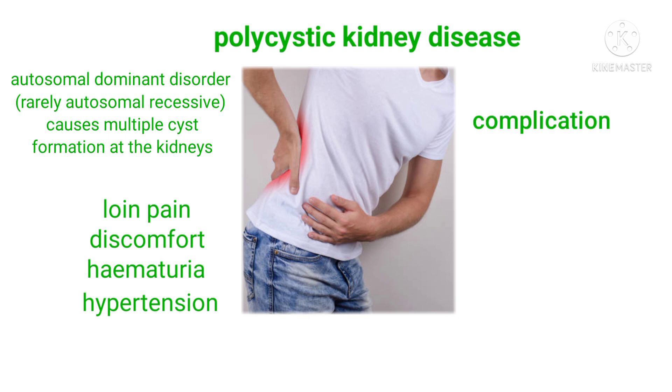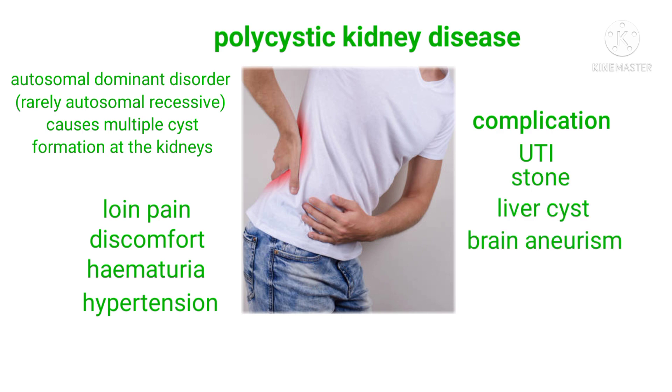Polycystic kidney disease may be associated with urinary tract infection, stones, liver cysts, brain aneurysm, and heart valve defects.